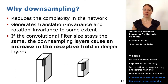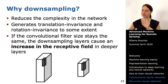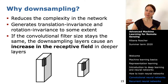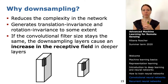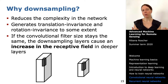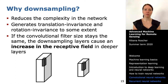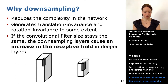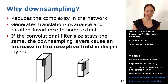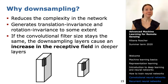Combining a fixed filter size with increasing depth, you can extract more complex structures — giving results similar to the feature visualization example shown at the beginning. Combining downsampling with depth yields these nice hierarchical features.